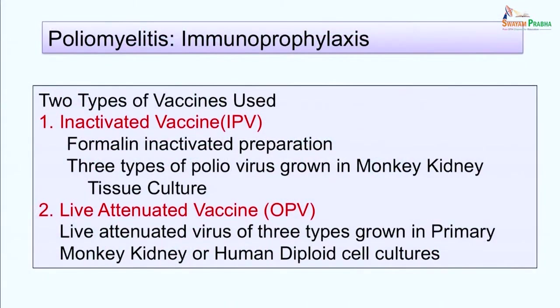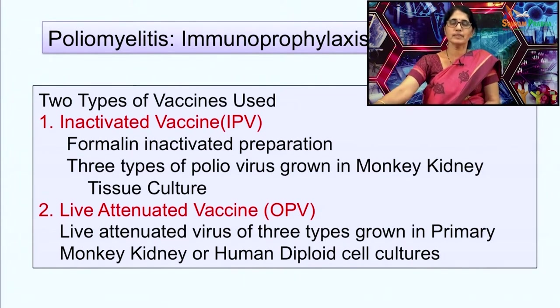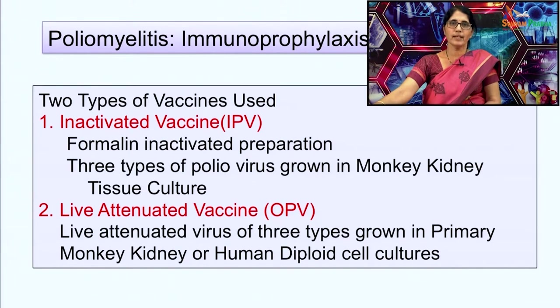Coming to immunoprophylaxis of poliomyelitis, two types of vaccines are used: inactivated vaccine (IPV) and live attenuated vaccine (OPV). IPV is a formalin-inactivated preparation containing three types of poliovirus grown in monkey kidney tissue cultures. OPV is a live attenuated virus of three types grown in primary monkey kidney or human diploid cell cultures, and because it is administered via the mouth, it is known as oral polio vaccine.